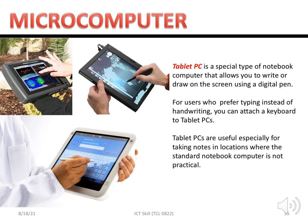A tablet PC is a special type of notebook computer — for example, an iPad or Samsung Galaxy. You can bring it everywhere as a mobile device. The difference from a laptop is that it uses a touch screen and also a stylus pen. It is practical, fits in your bag, and you can attach a keyboard to it so it looks like a laptop.